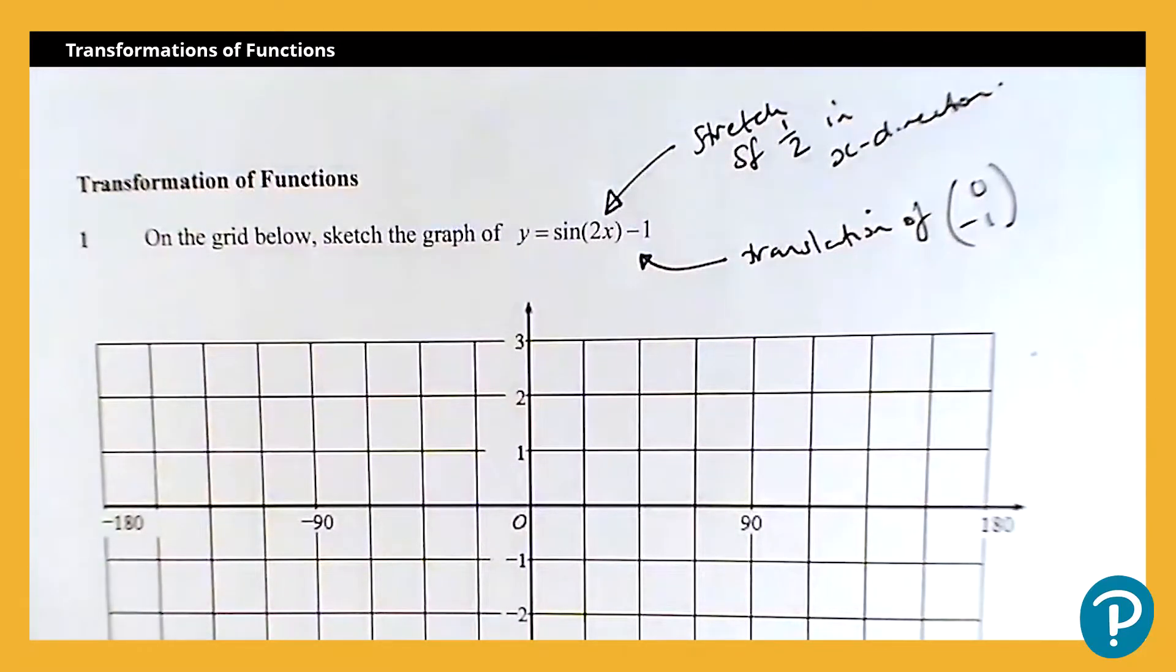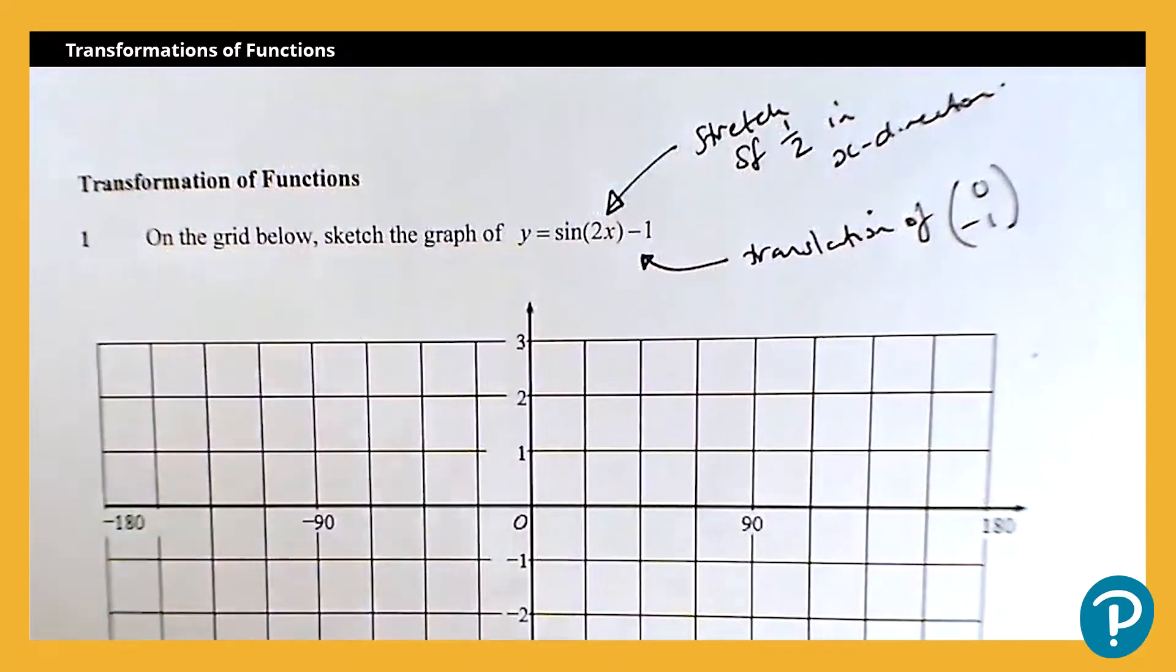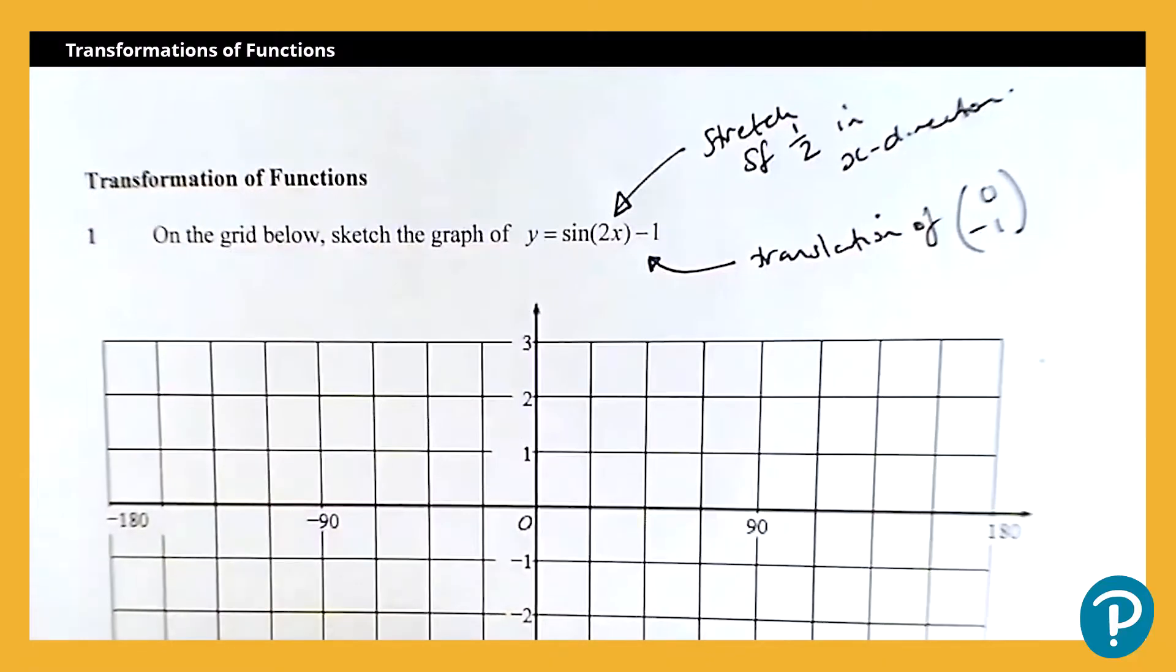Now the other thing I need to know here is what does the graph of y equals sine x look like? So I'm going to start by drawing a graph of y equals sine x. I'm then going to draw the graph of y equals sine 2x, and I'll do them in different colors on the same grid. And I'll move on to the grid to finish it off and add in the translation as well.